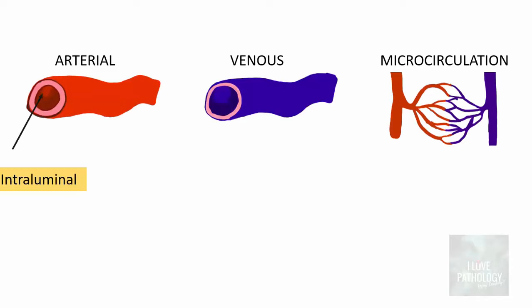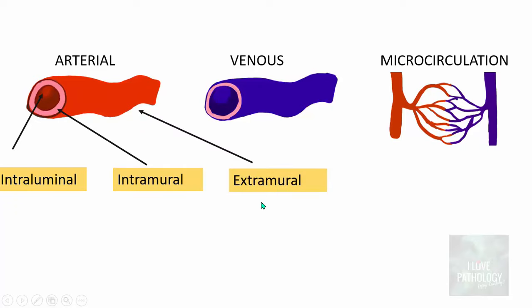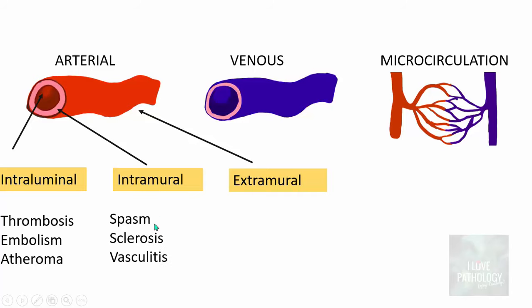The arterial causes could be intraluminal, intramural, or extramural. Intraluminal causes include thrombosis — the most common cause of infarction — and embolism. All causes resulting in embolism can occlude the artery and cause infarction. Atheroma can also cause infarction. Intramural causes include spasm of the vessel wall, sclerosis, or vasculitis. Extramural causes involve compression from outside, such as from a tumor, ligation, adhesion, or torsion.